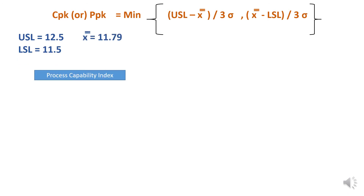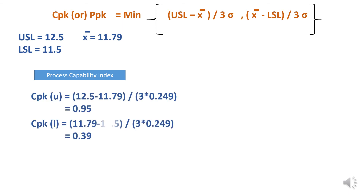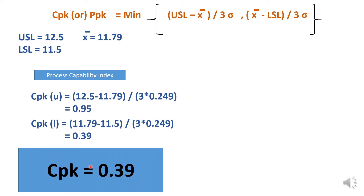For Cpk — the process capability index — we calculate both USL minus X-double-bar divided by 3 sigma, and X-double-bar minus LSL divided by 3 sigma, using sigma of 0.249 from the range method. We then take the minimum of the two values. The upper side is 0.95 and the lower side is 0.39. So the Cpk value is 0.39.